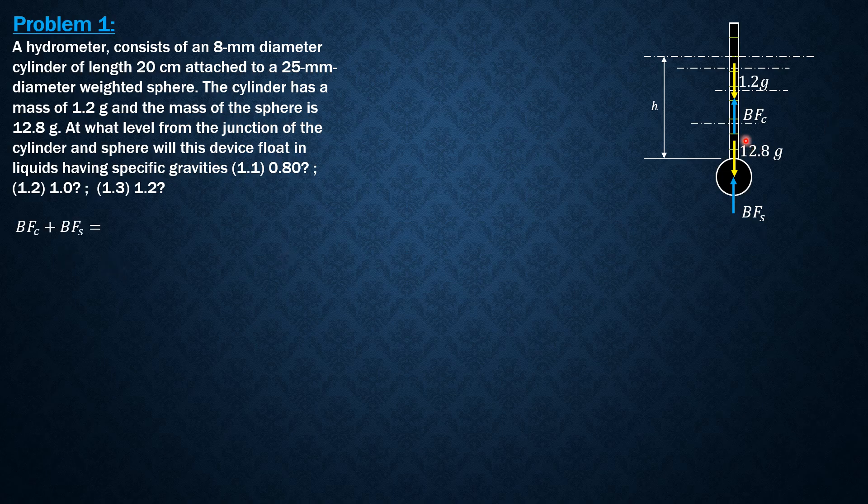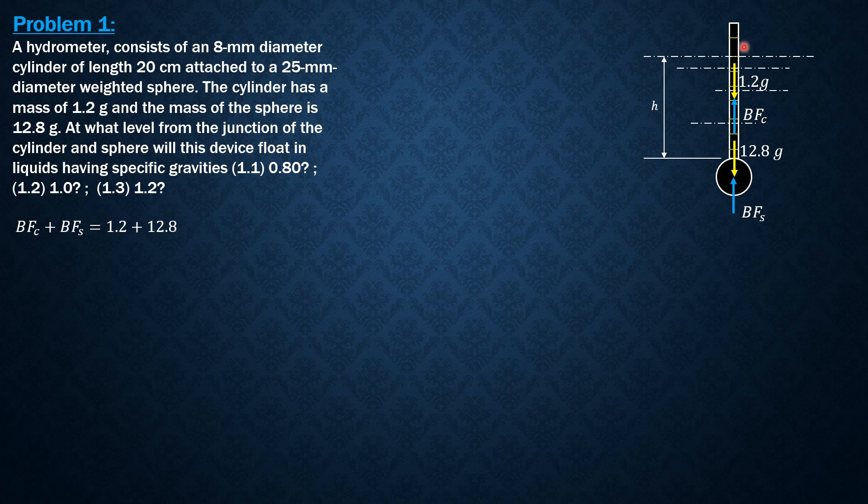So buoyant force in the cylindrical part plus buoyant force in the spherical part is equal to 1.2 grams plus 12.8 grams. So to be consistent with the units, this buoyant force must be in grams also so that it is consistent. So this is the free body diagram.